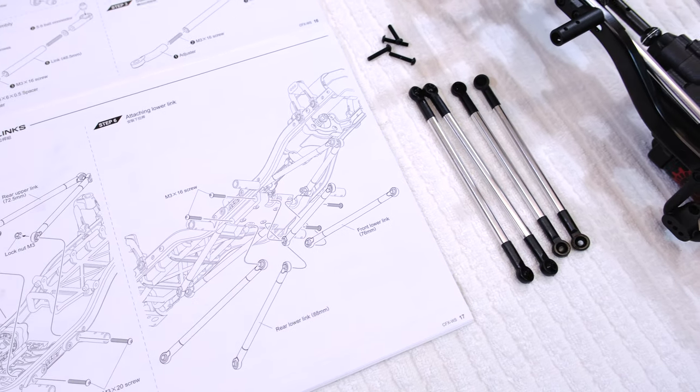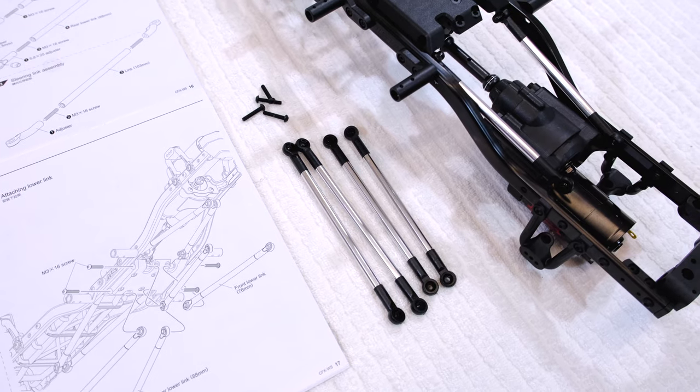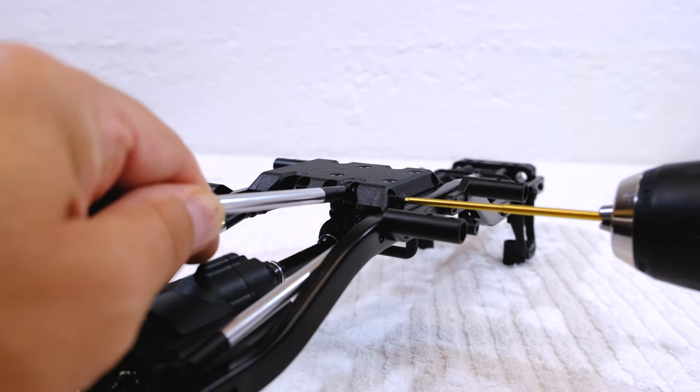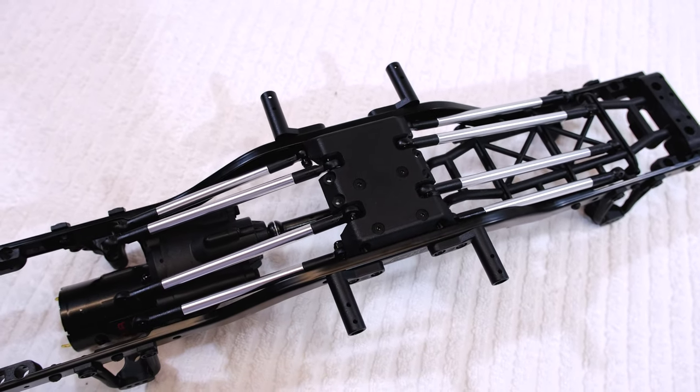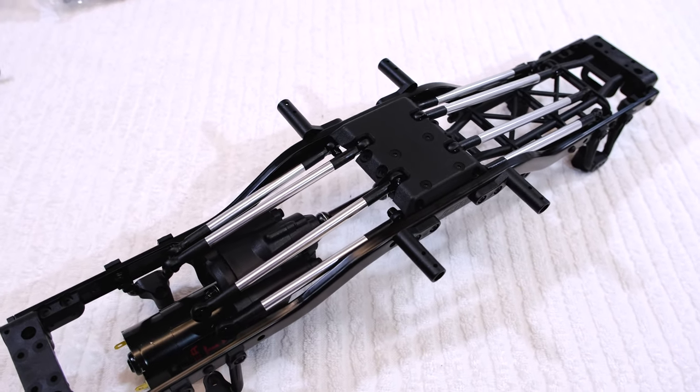Step 5 is to attach the lower links. Here you can see, all links are installed on the chassis.